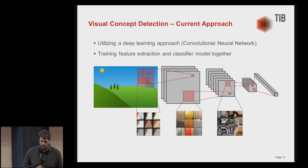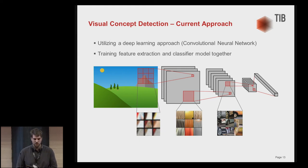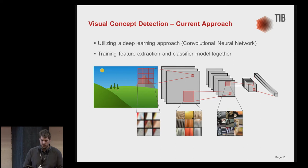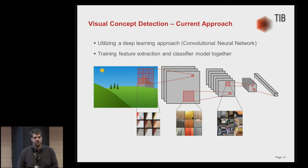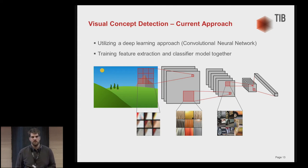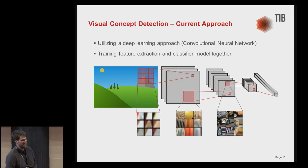Now to our new approach — I will give you a short overview. We are utilizing a deep learning approach using convolutional neural networks. The main improvement over the previous approach is that we train the feature extractor and the classifier model together. We don't use handcrafted features anymore; instead, the features we extract are learned from the data itself.